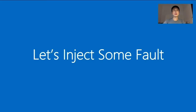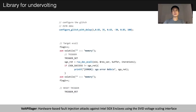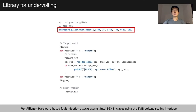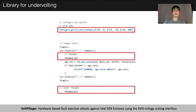Let's start injecting some faults. To make things easier, we created a library for undervolting. The configure_glitch_with_delay function sends configuration to the voltage glitcher and sets up the trigger. The trigger_set function sends the trigger to activate the glitch, and trigger_reset resets the trigger.